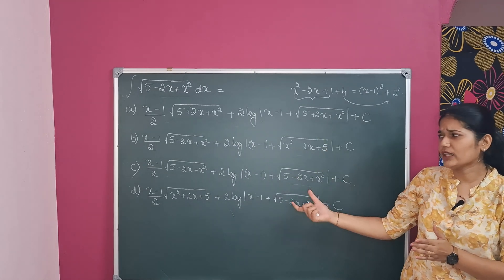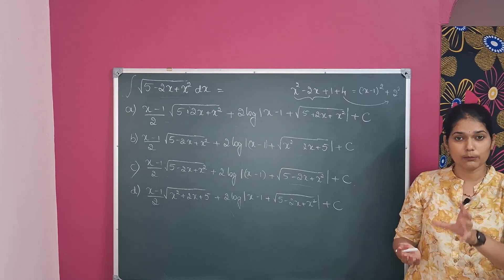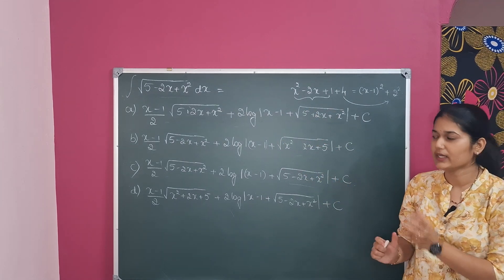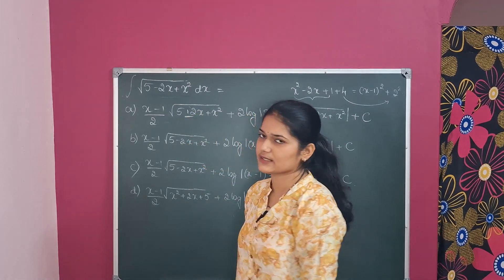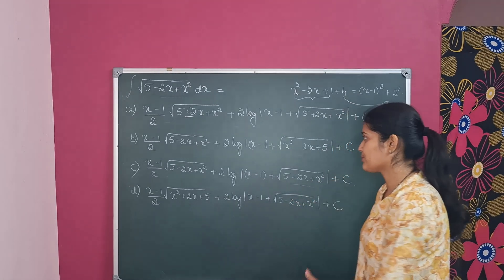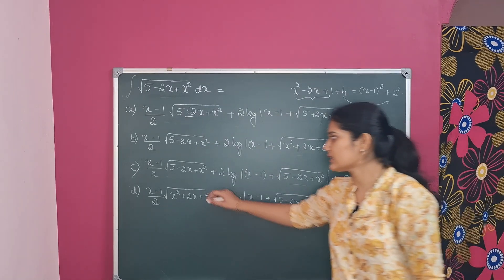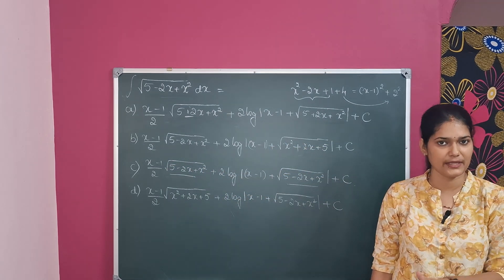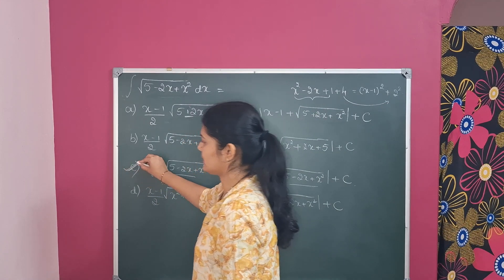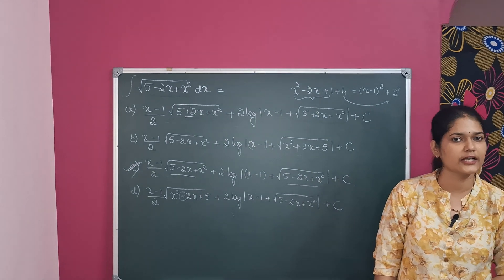Look at the options — all options are almost the same, differing only in plus and minus signs. In both terms, we must have the 5 minus 2x plus x square term. In option A, there is a plus where we should have minus, so that is not the answer. Similarly, option B also has a plus sign, so that is not the answer. In option C, both terms correctly have 5 minus 2x plus x square, same as x square plus a square — therefore, this is the required answer. Option D also has a wrong plus sign in one term, so it cannot be the answer.